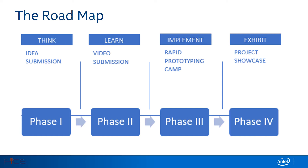Phase two is video submission of a working model for the proposed idea. During this phase, shortlisted teams from phase one need to learn about the technology for implementation of their project idea. Once implementation is done, teams will have to submit a video of the working model as per the timeline to become eligible for the next phase.